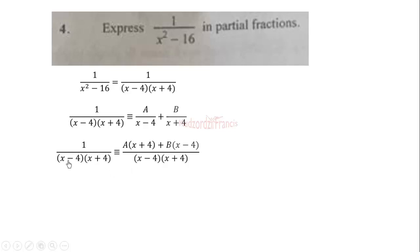So we can say that the denominators are now equal, so the numerators must also be equal. If that is the case, we can expand on the right hand side to get 1 equals Ax plus 4A plus Bx minus 4B.